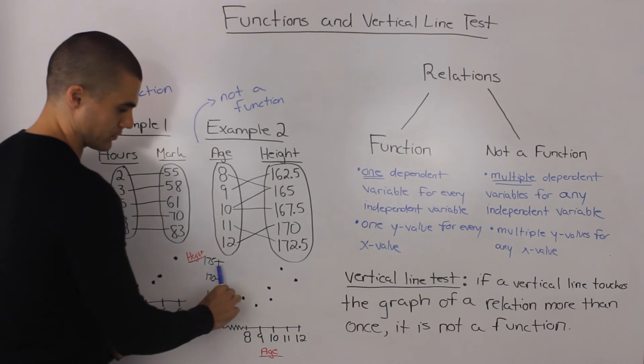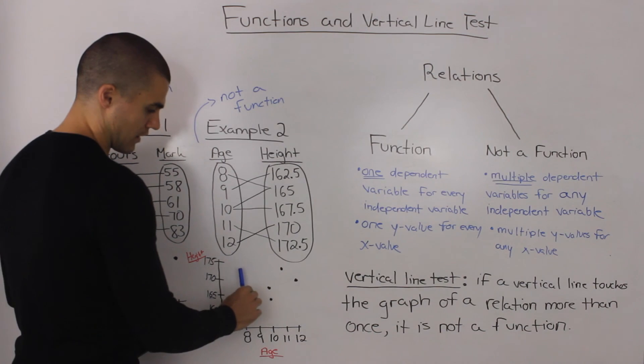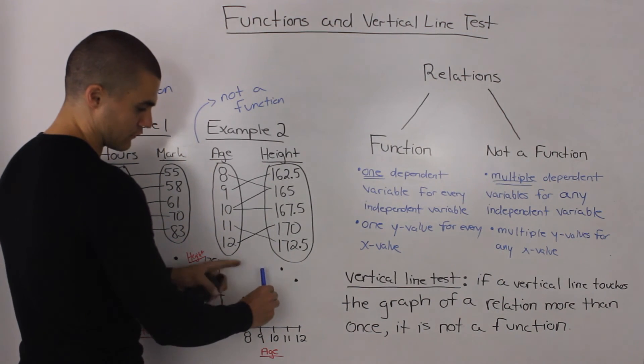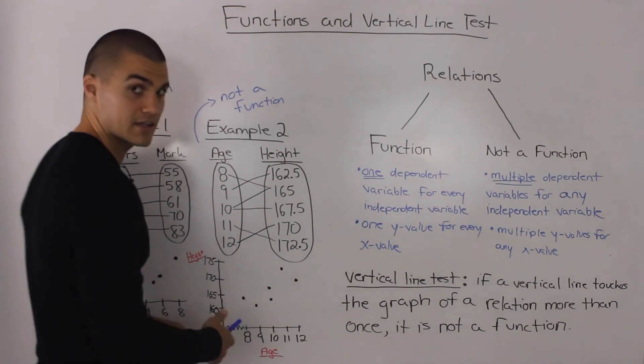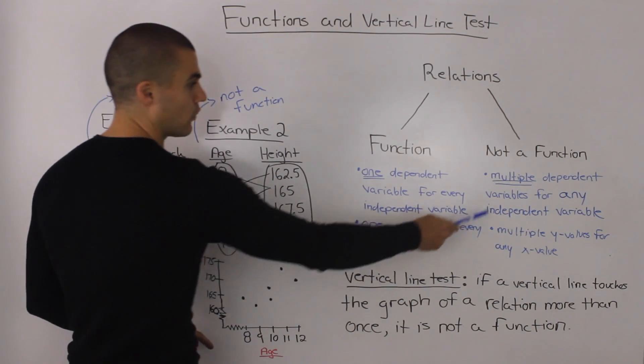And the intuition is pretty simple. If there are multiple points touching a vertical line of a graph, then you know that there are multiple y values for that single x value. And as we stated before, that means that that relation would not be a function.